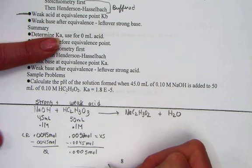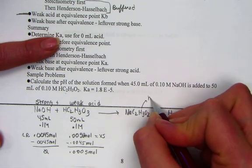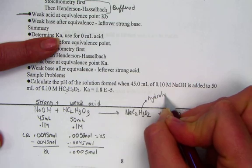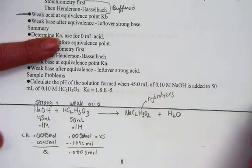So 50 minus 45 would provide us 0.0005 moles of the acid left over. Now remember, this salt hydrolyzes. It will also affect the pH.